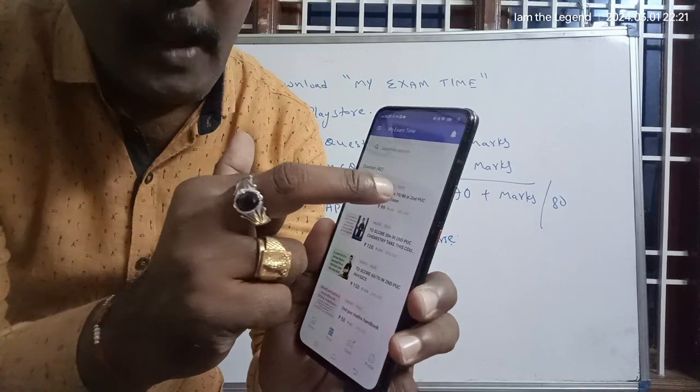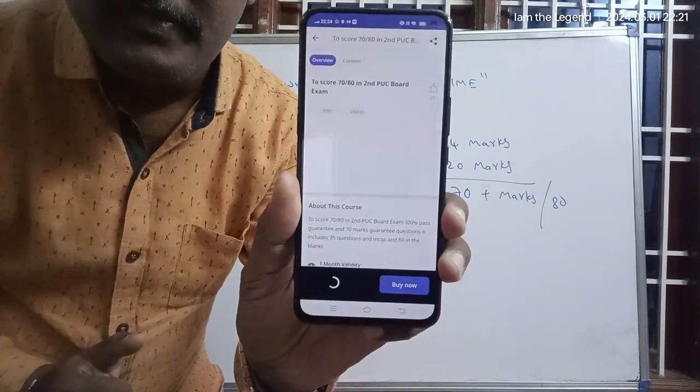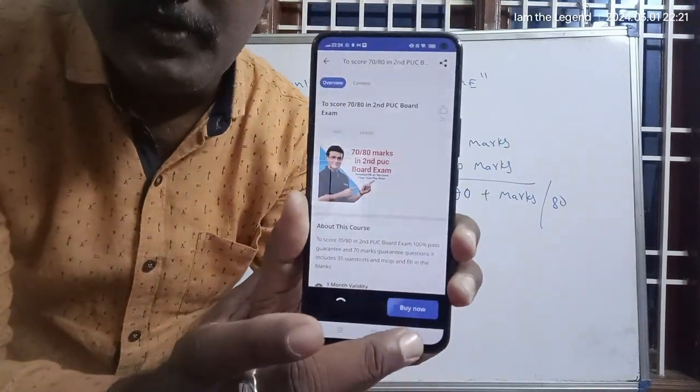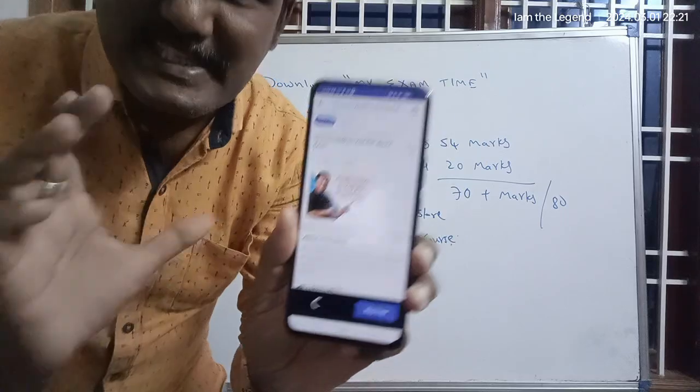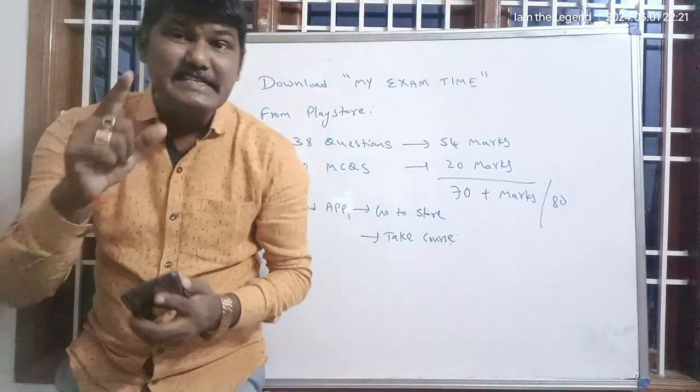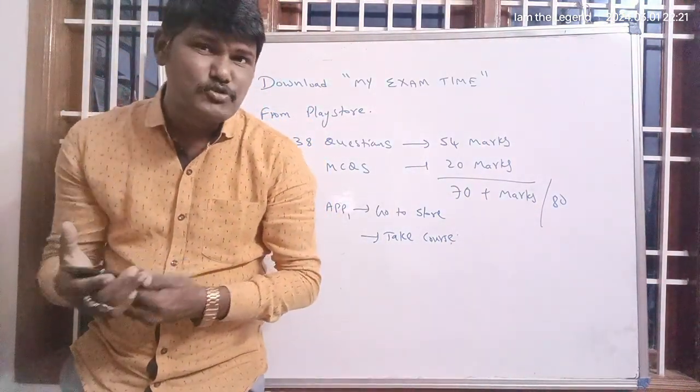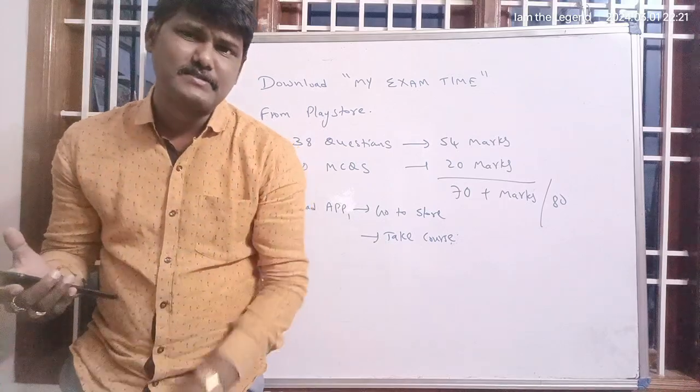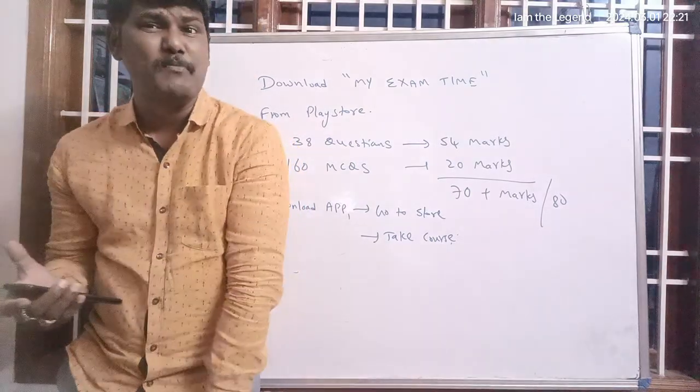If you open Store, dear students, here you are getting the first one only: To Score 70 out of 80 in Mathematics. Take this course, please click on this and you can buy this one.